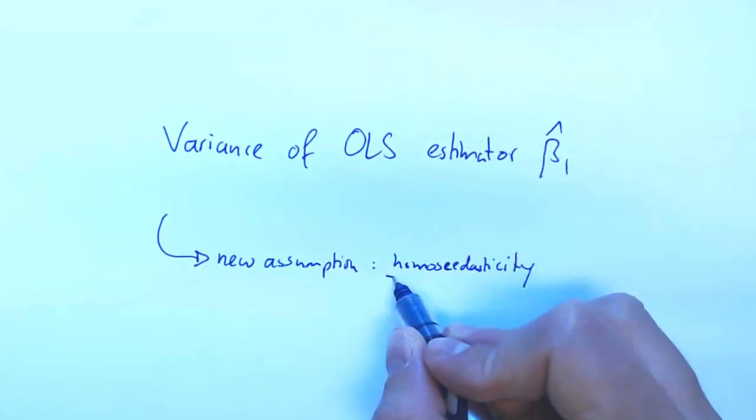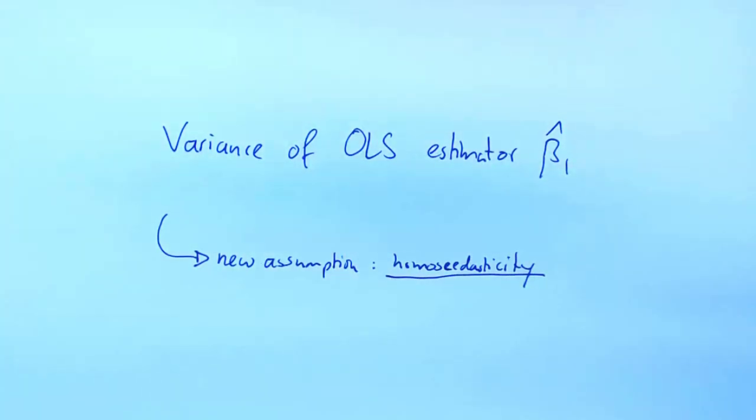Homoscedasticity assumption. Now this assumption is actually something that you don't want to assume when you apply the OLS estimator in practice and you don't really need it in practice. So the reason we are introducing it here is that once we assume homoscedasticity, then it becomes very easy to write down a nice expression for the variance of the OLS estimator. And once we have that expression, we can analyze it a little bit and we can see what kind of things feed into it.